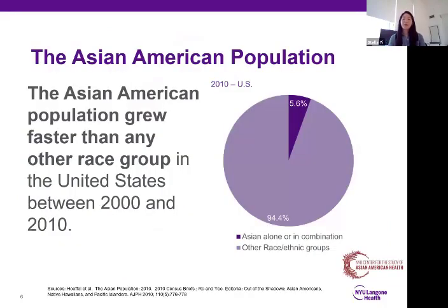Some of the growth of the population has been driven by the growth of the Asian American and Hispanic populations over the past 50 years. In fact, the Asian American population grew faster than any other racial ethnic group in the United States between 2000 and 2010. Asian Americans make up 5.6 percent of the U.S. population — so on an absolute level, it's still a small proportion of the overall U.S. population, despite this growth.